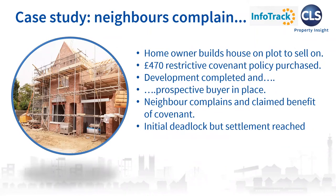Our next case study highlights the value of indemnity policies in dealing with neighbours who turn out to be less than helpful — where the indemnity policy enabled a project to progress and costs to be covered, otherwise leading to a six-figure loss on the part of the insured party. The policyholder owned a large plot in the Midlands and decided to build a new house on part of that plot to sell on. Neighbouring properties were believed, correctly, to have the benefit of a restrictive covenant that could restrict development on the land, so cover was put in place. It didn't look like the claim was likely throughout the planning process and even well into the build, primarily because the neighbour who was the main risk had actually verbally given their blessing for the development after initially putting in a written objection to the planning authority.